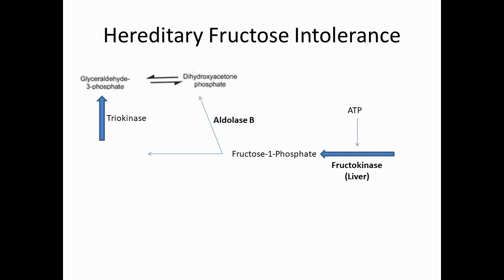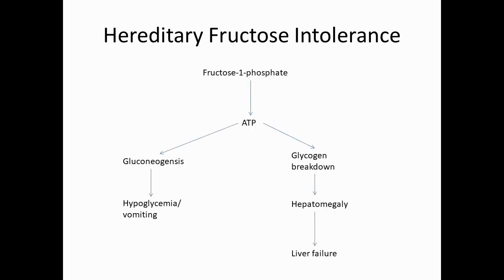The second disease is hereditary fructose intolerance, caused by a deficiency of aldolase B. This leads to accumulation of fructose-1-phosphate in the body. Because fructose cannot proceed through glycolysis, there is low ATP production. Low ATP results in reduced gluconeogenesis, causing hypoglycemia and vomiting.